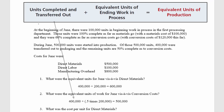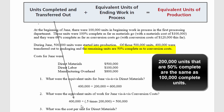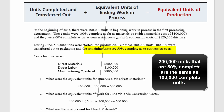For conversion costs the formula is the same: units transferred out 400,000 plus equivalent units worth of work left in ending inventory. There are 200,000 units left — we had 600,000 total, we moved out 400,000. Those 200,000 are 50% complete as far as conversion costs go. So 200,000 units at 50% complete equals 100,000 complete units. Our equivalent units for conversion costs is 400,000 plus 100,000, or 500,000.